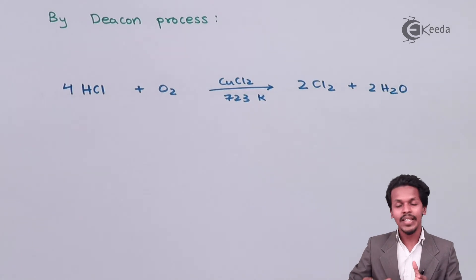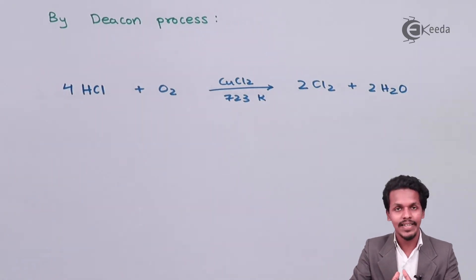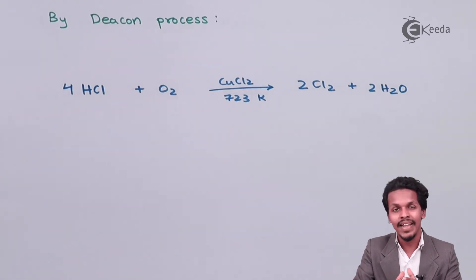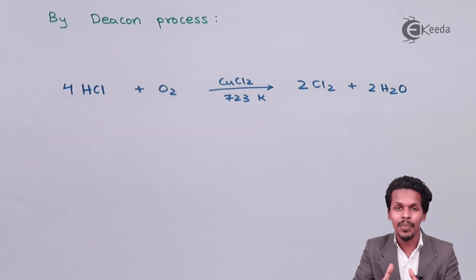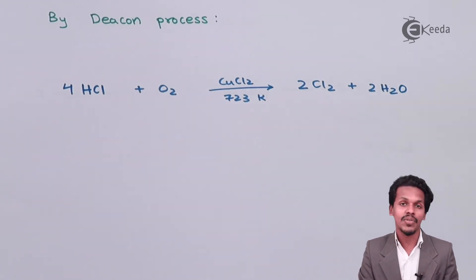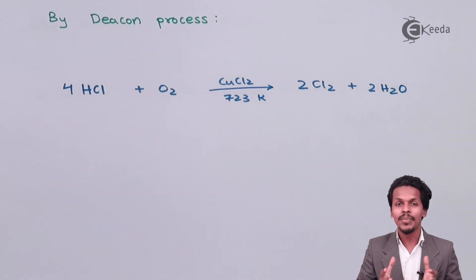By electrolysis of molten NaCl we can also separate out Cl2 as well as sodium, where the sodium is used for preparation of NaOH. So in that case also we can easily obtain Cl2. These were all the methods to prepare Cl2 and that's it.